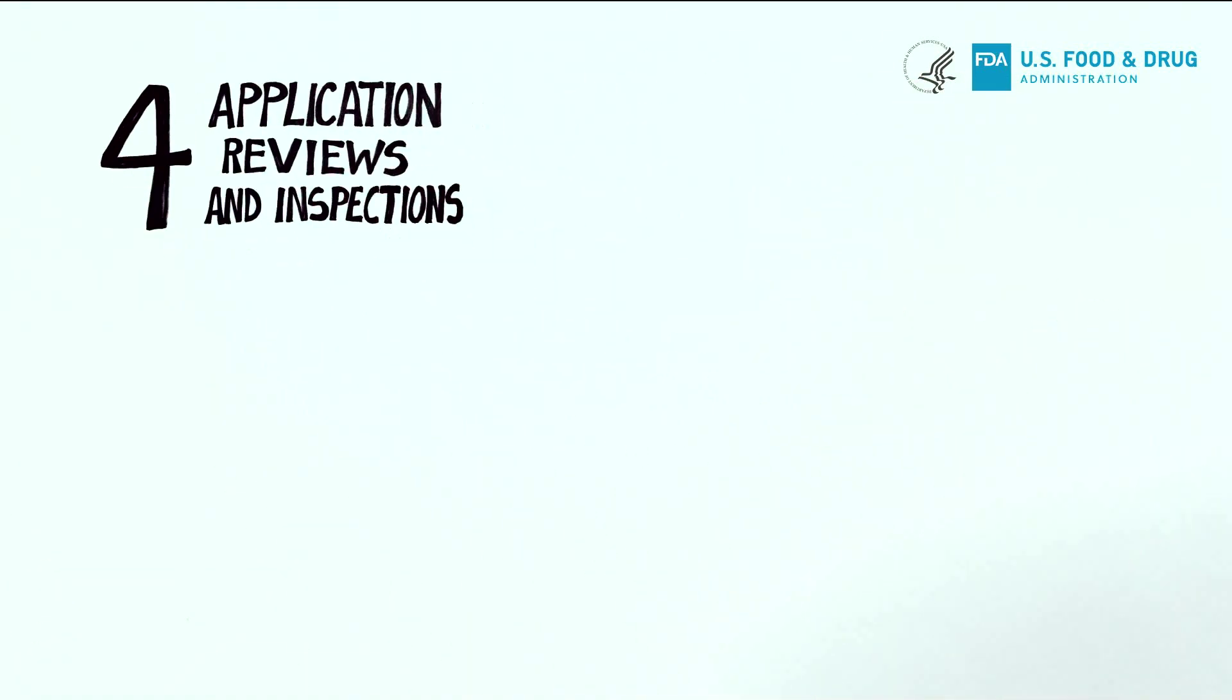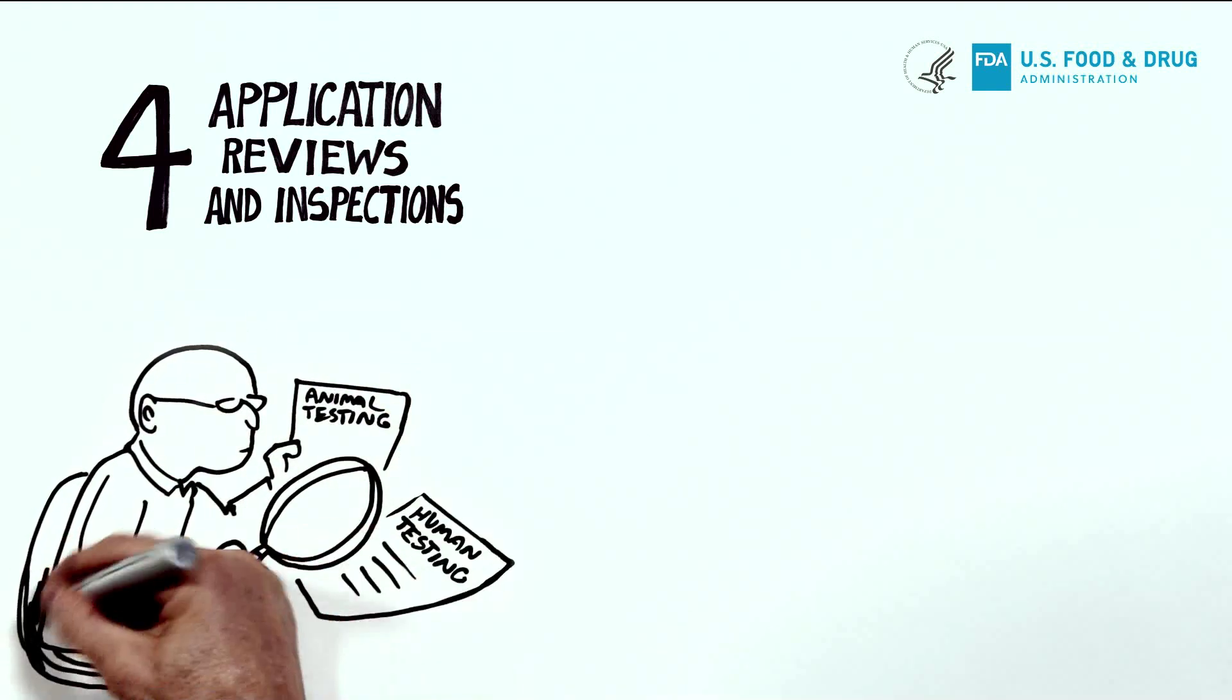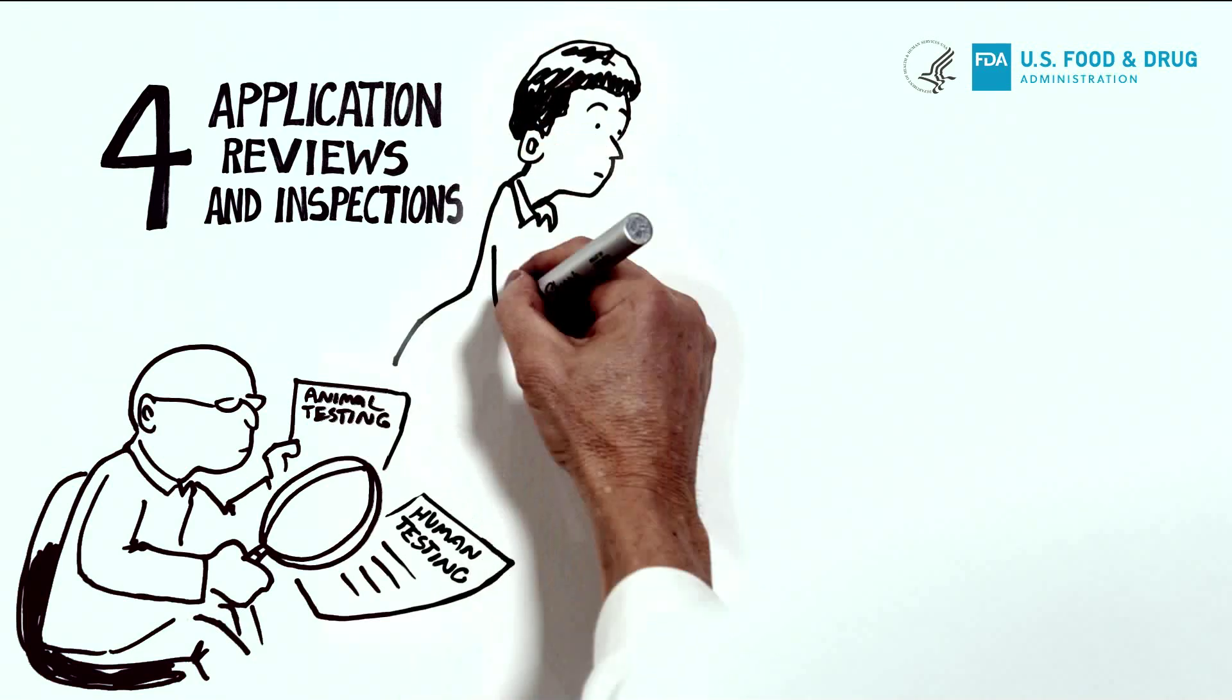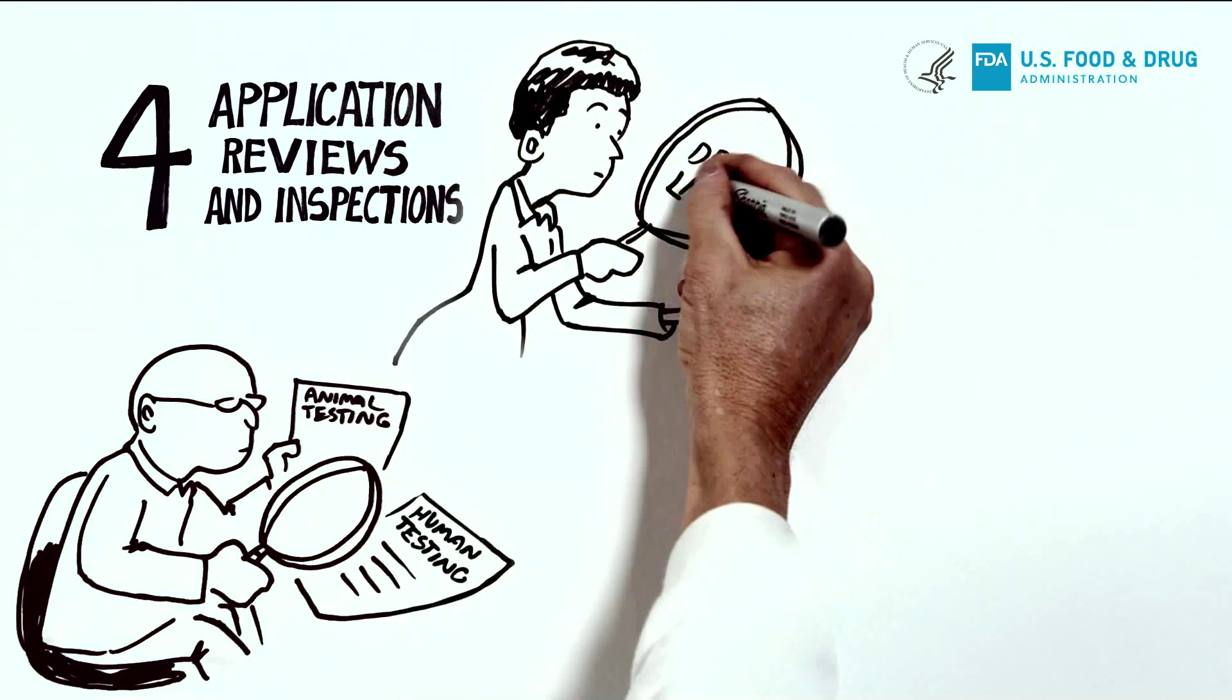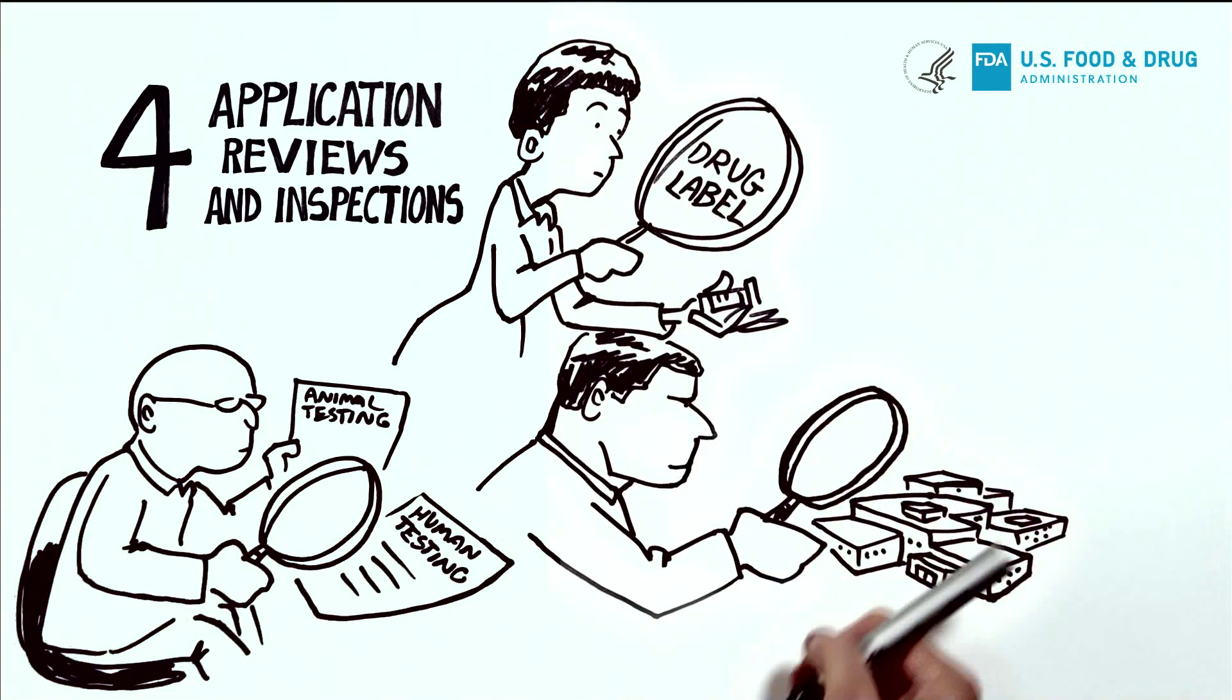After the clinical trials are complete, the FDA looks carefully at all the animal and human testing data, reviews the drug labeling information, and inspects the facilities where the drugs will be manufactured to determine if the new drug is safe and effective.